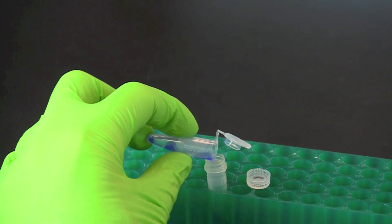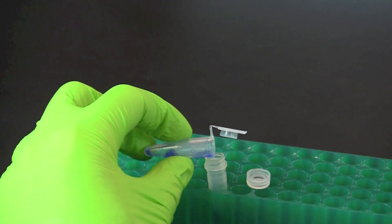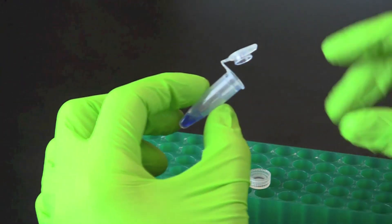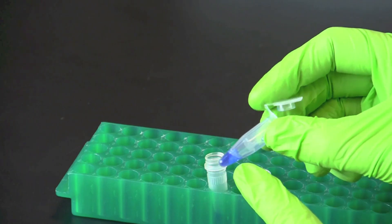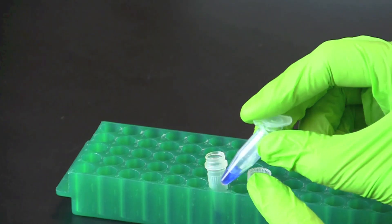Following the room temperature incubation, carefully transfer the buffer from the microcentrifuge tube into the screw cap tube by pouring. Be careful not to transfer any of the fish muscle tissue.